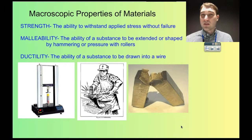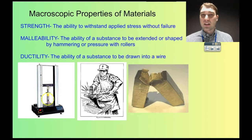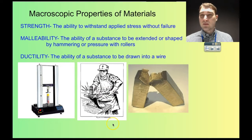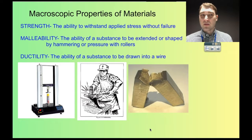Another property is strength — the ability to withstand stress without failing. Malleability is the ability to be shaped using pressure or hammering. And ductility is the ability to be drawn into a wire. Here's a strength testing machine testing the strength of a can; you'd want the can to resist a certain amount of force since it's carrying a pressurized gas inside, and if it bursts, that could be quite dangerous. Malleability is handy for metals when you want to hammer them into a particular shape. Ductility — gold is the most ductile of metals; one gram of gold could be drawn into a wire 2.4 kilometres long.